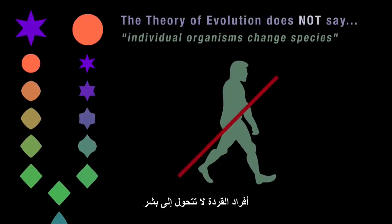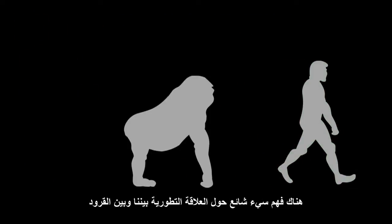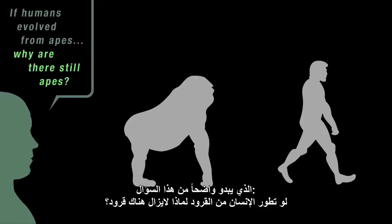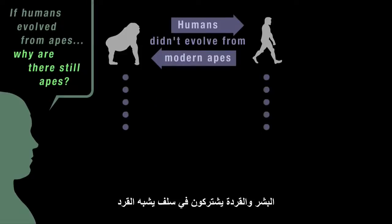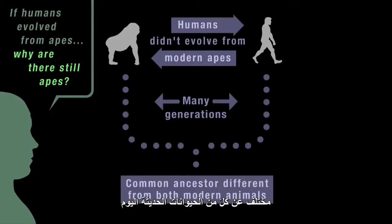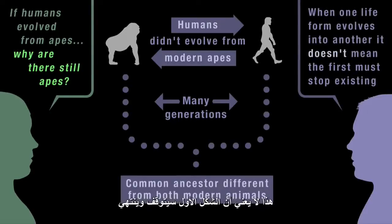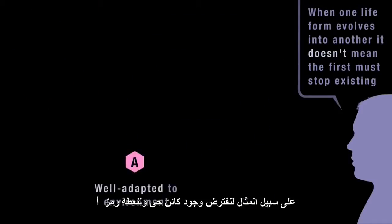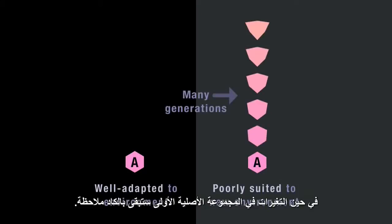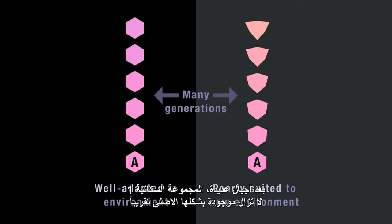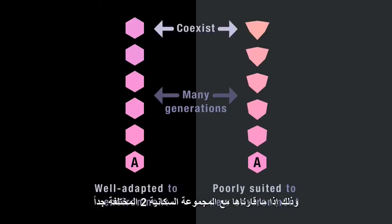While we're on the subject of apes and humans, there's a common misunderstanding revealed by the question: 'If humans evolved from apes, why are there still apes?' Firstly, humans didn't evolve from the apes we see today — humans and modern apes share a common ape-like ancestor different from both modern animals. But secondly, when one lifeform evolves into another, that doesn't mean the first lifeform has to stop existing. A population so well adapted to its environment changes very little, while a separate group spreading to a new environment may change dramatically. After many generations, Population 1 still exists in more or less its original form alongside the now very different Population 2 — it didn't have to die out or change at the same rate.